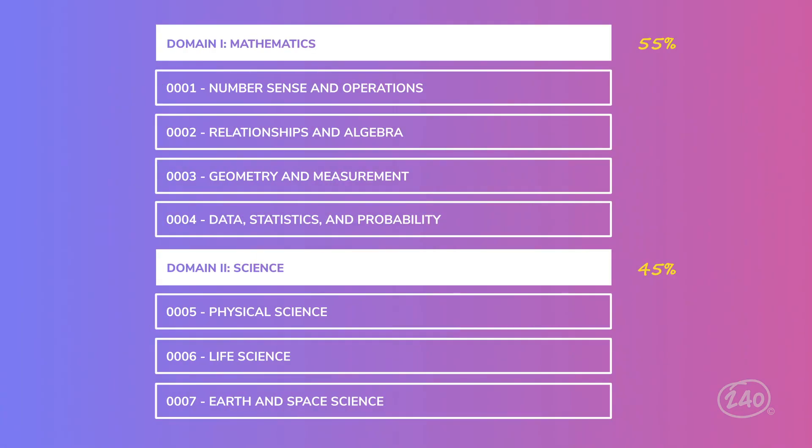Let's start with the first domain, mathematics. The first competency is number sense and operations. An essential concept to know for this competency is converting between fractions, decimals, and percentages. Let's take a closer look.